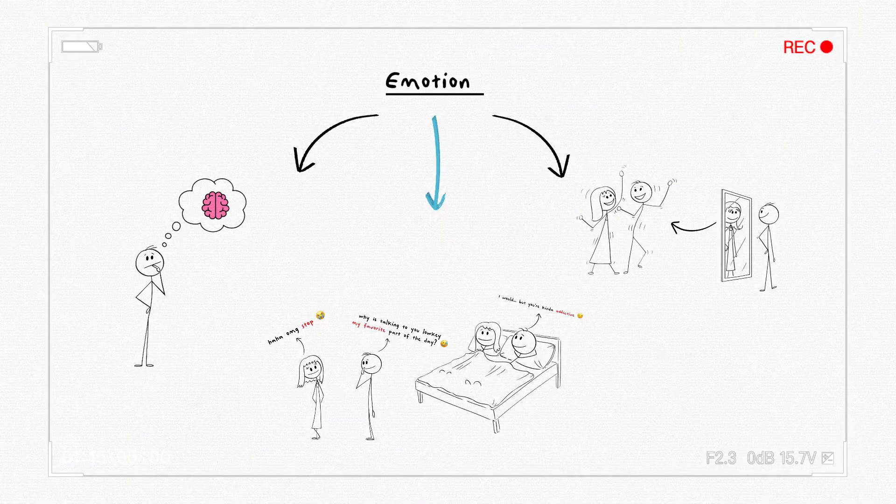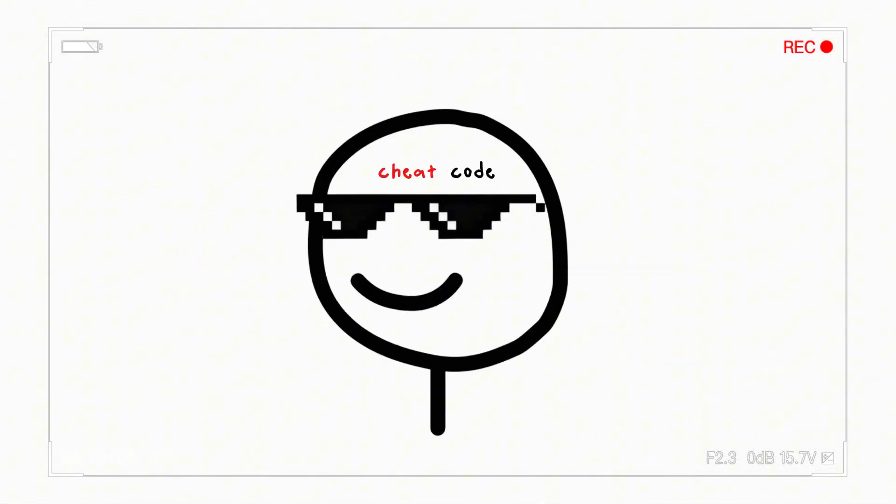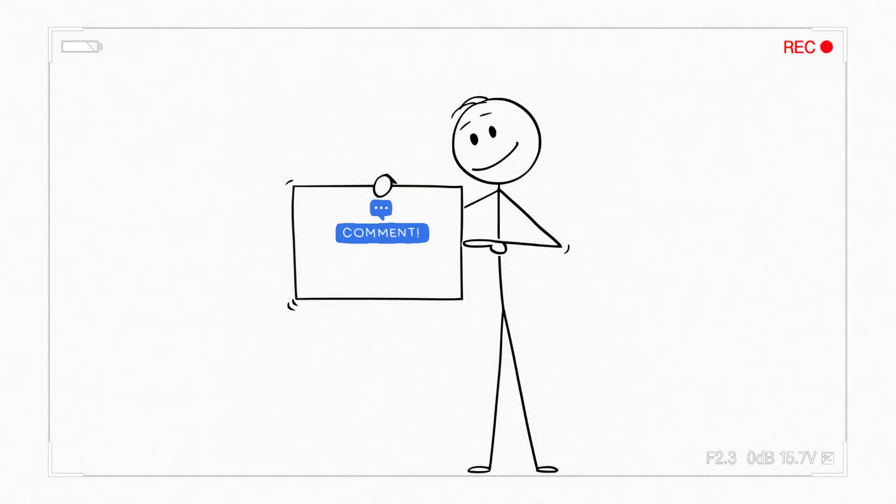Your brain's not asking your permission. It's running algorithms. But now, you know the cheat codes. Call to action. Comment below. Did your last crush match any of these brain tricks?